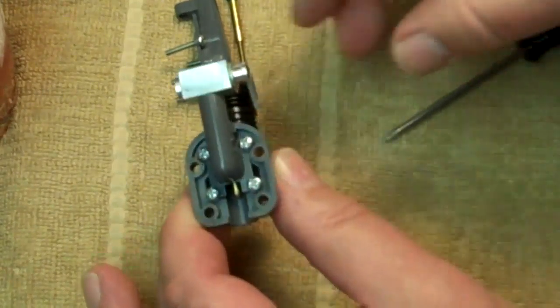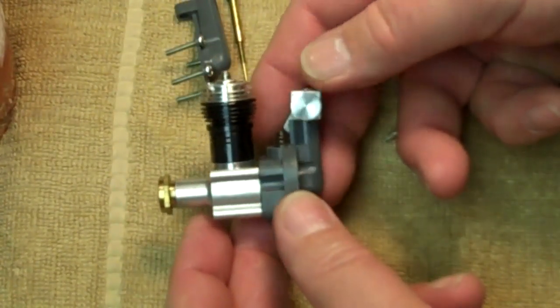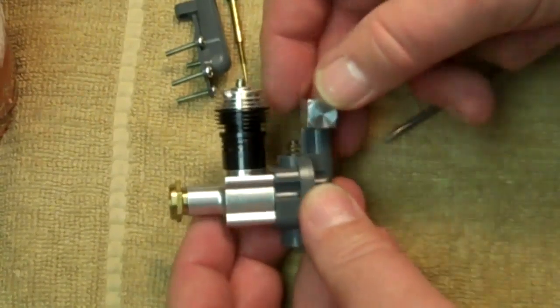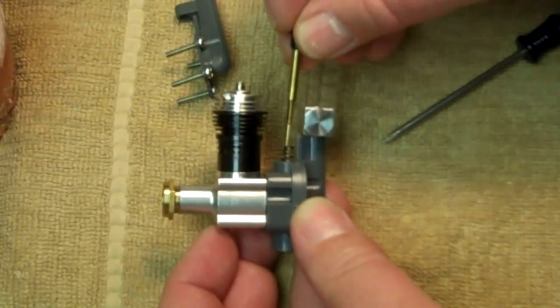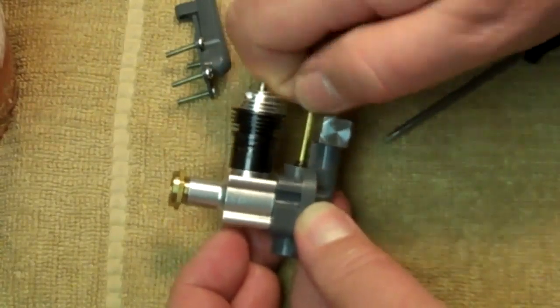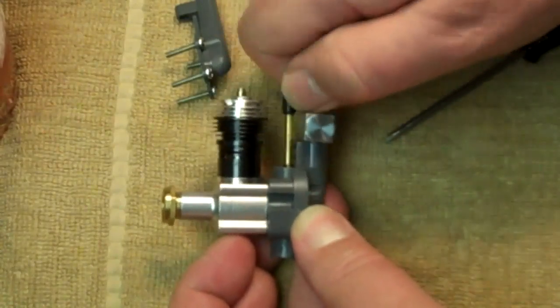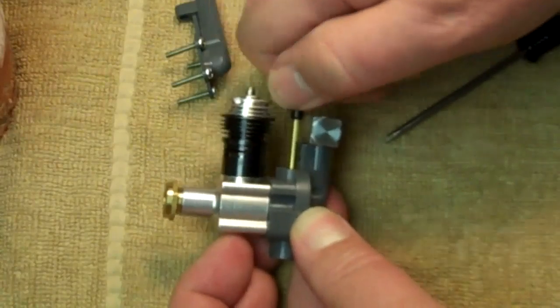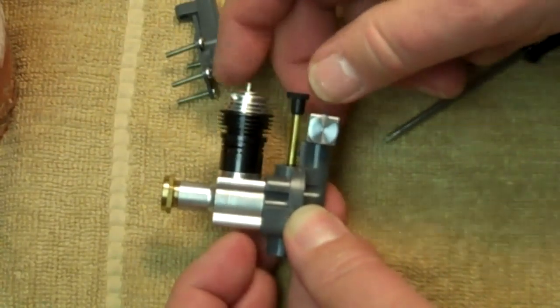And there you have it, a Cox Sure Start 049 engine that has been modified to be a throttable Cox Sure Start engine. Put my needle valve back in, crank it out two and a half turns.